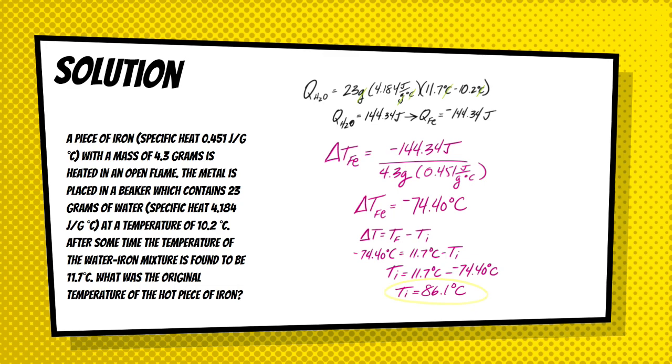So, then I used that value along with iron's mass and its specific heat to calculate the change in temperature that the iron went through. And this was negative 74.40 degrees Celsius. So, in other words, the iron which was heated in a flame got really, really hot and when it went into the water, its temperature went down by 74.40 degrees Celsius. So, that means we still have to find that initial temperature, right? So, if we know that delta T is equal to the T final minus the T initial, I can plug in the delta T that we calculated, also adding in the final temperature of 11.7 which was given in the problem. And that's how I got that 86.1 degrees Celsius for the final answer.